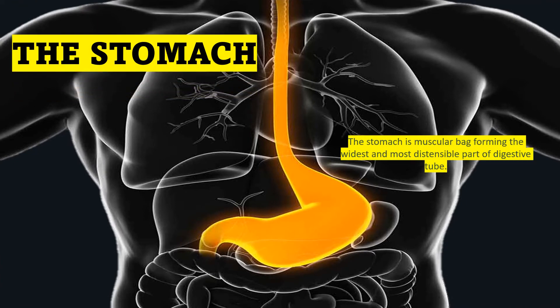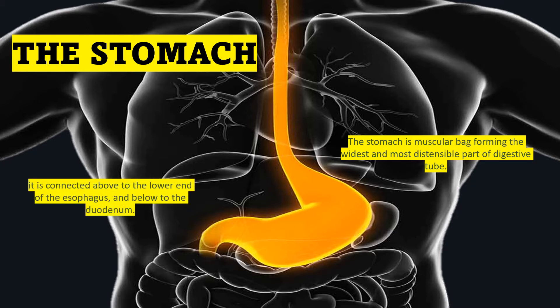The stomach is a muscular bag forming the widest and most distensible part of the digestive tube. It is connected above to the lower end of the esophagus and below to the duodenum.